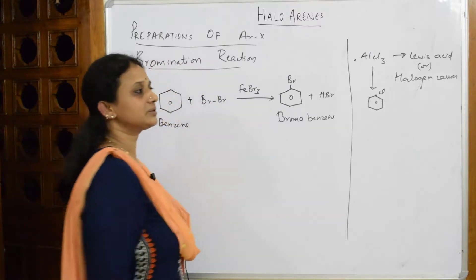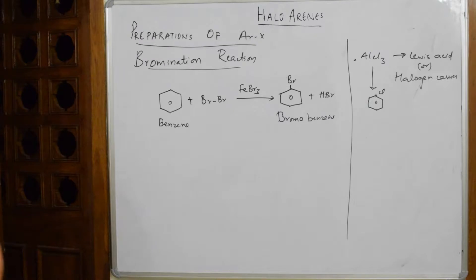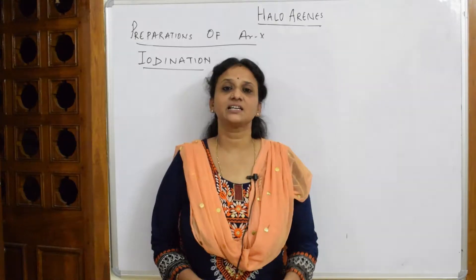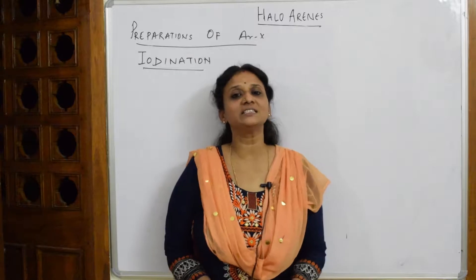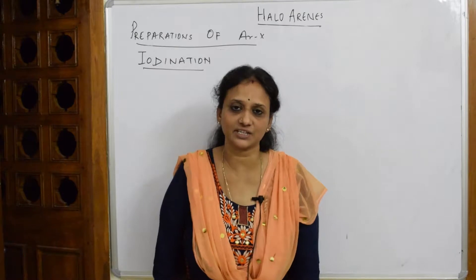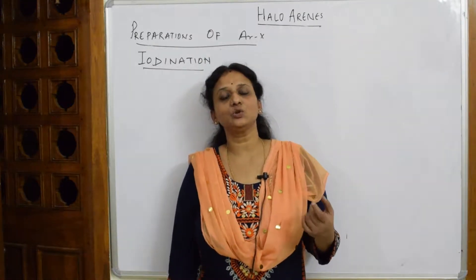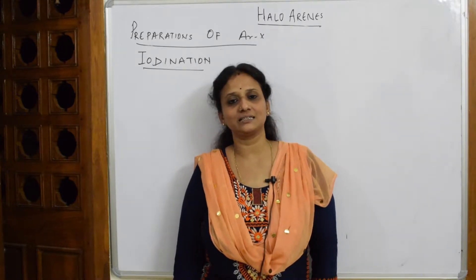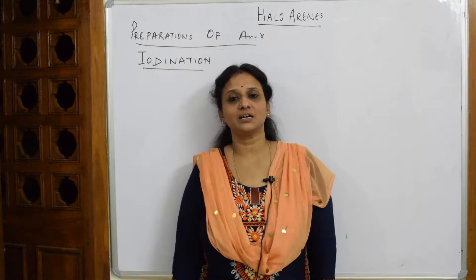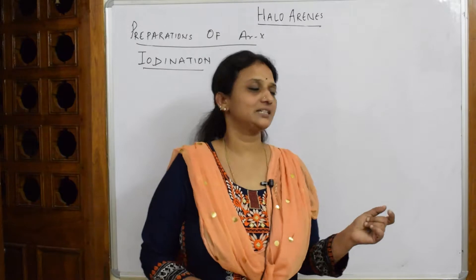This is how you write bromobenzene. To summarize: chlorobenzene is prepared by chlorination using AlCl₃, and bromobenzene is prepared by bromination using FeBr₃. Now let us come to the third preparation — iodination — which is also from benzene, but there is one important difference to remember.